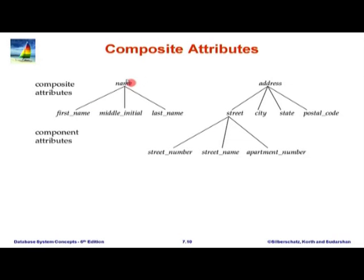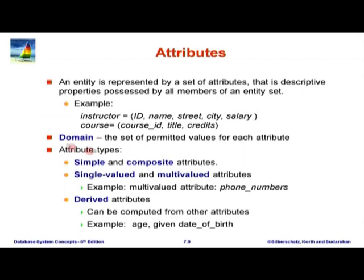Composite attributes: name may be broken up into first name, middle initial, and last name. Address may be broken up into street, city, state, and postal code. The street part itself may be broken into house number, street name, and apartment number. These are composite attributes with parts — component attributes are the parts of the composite, while attributes without parts are simple attributes.